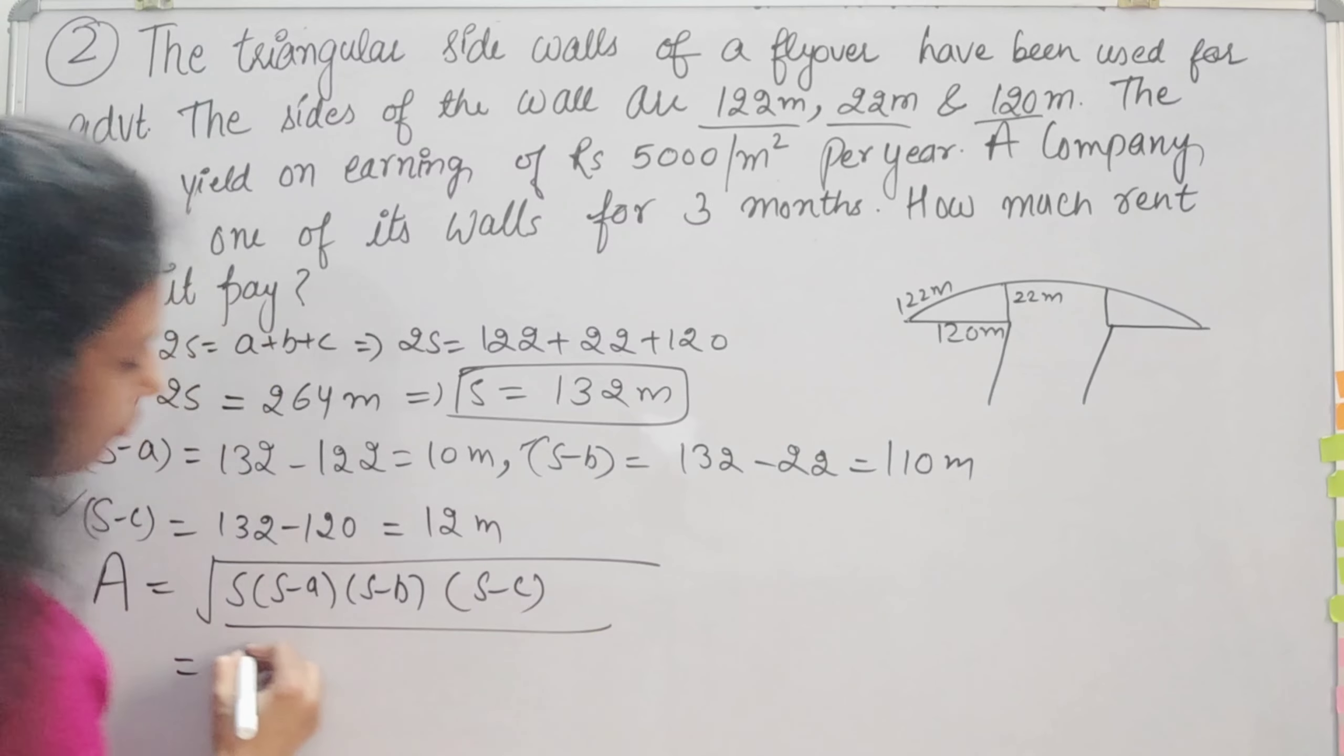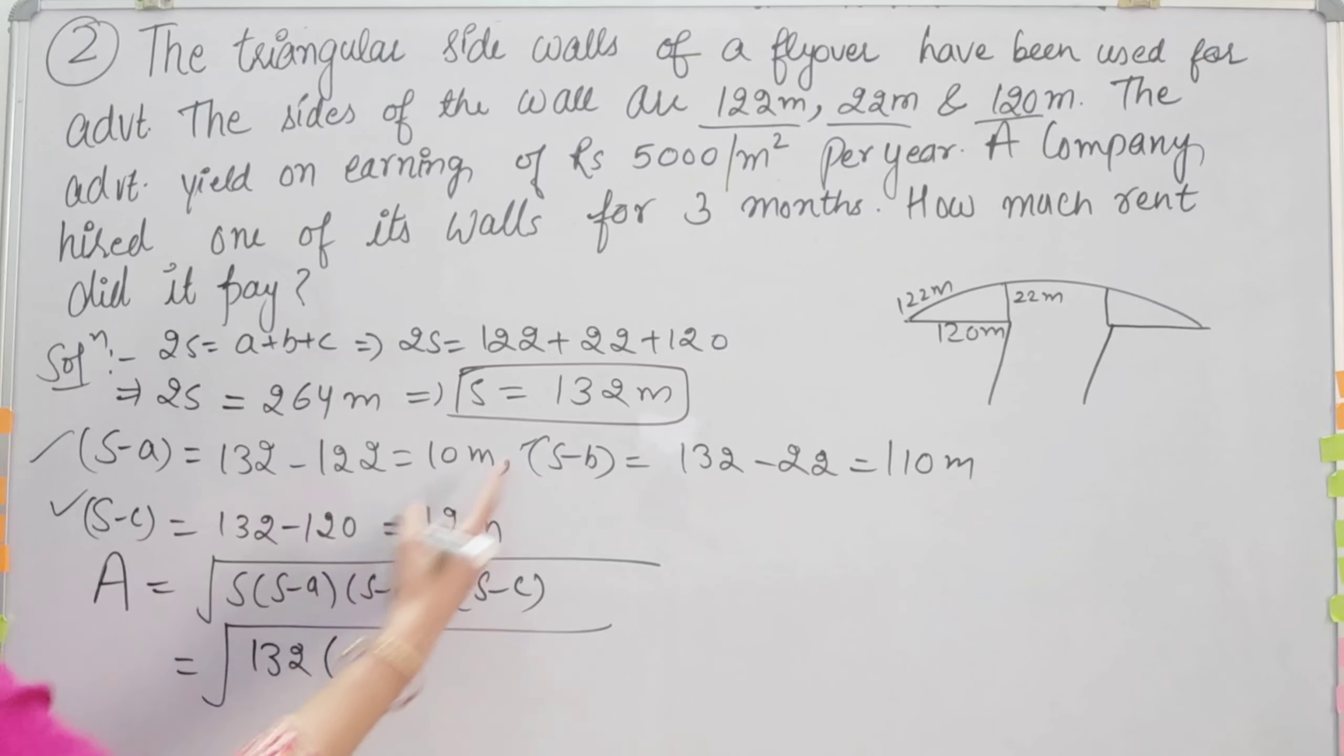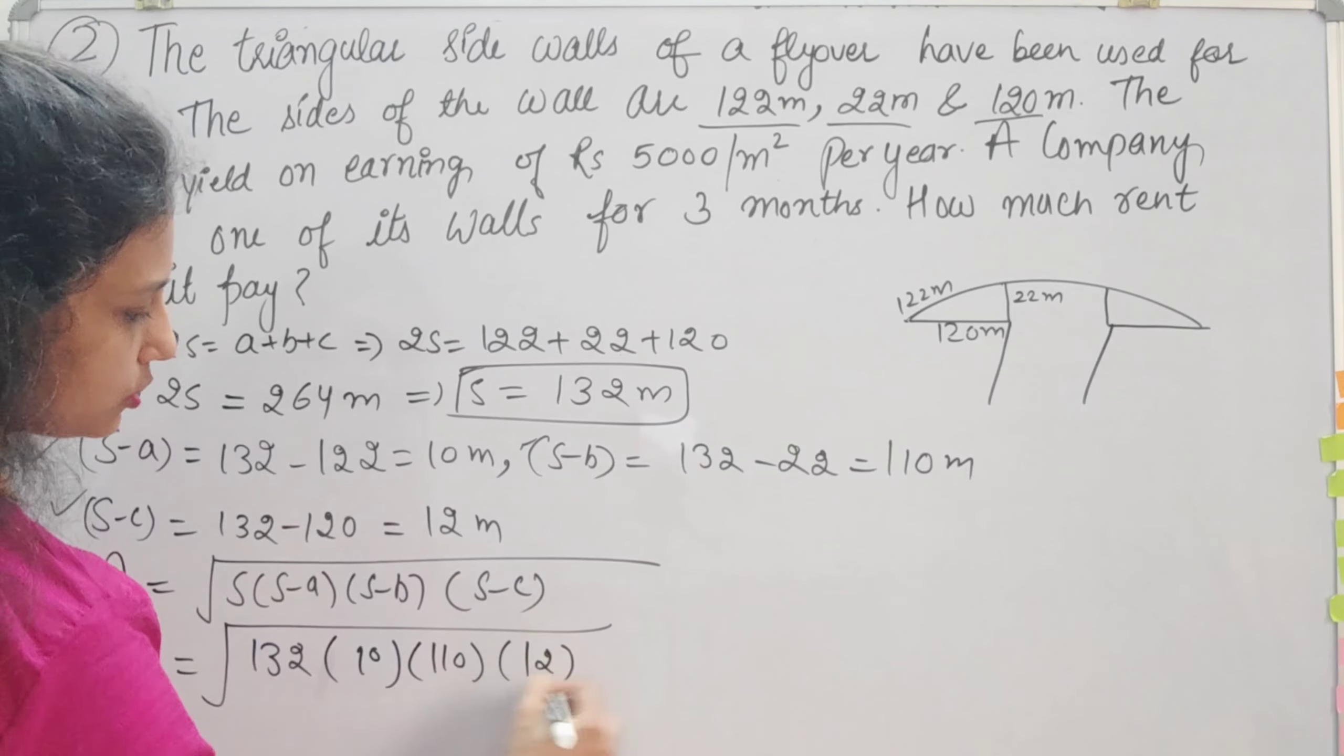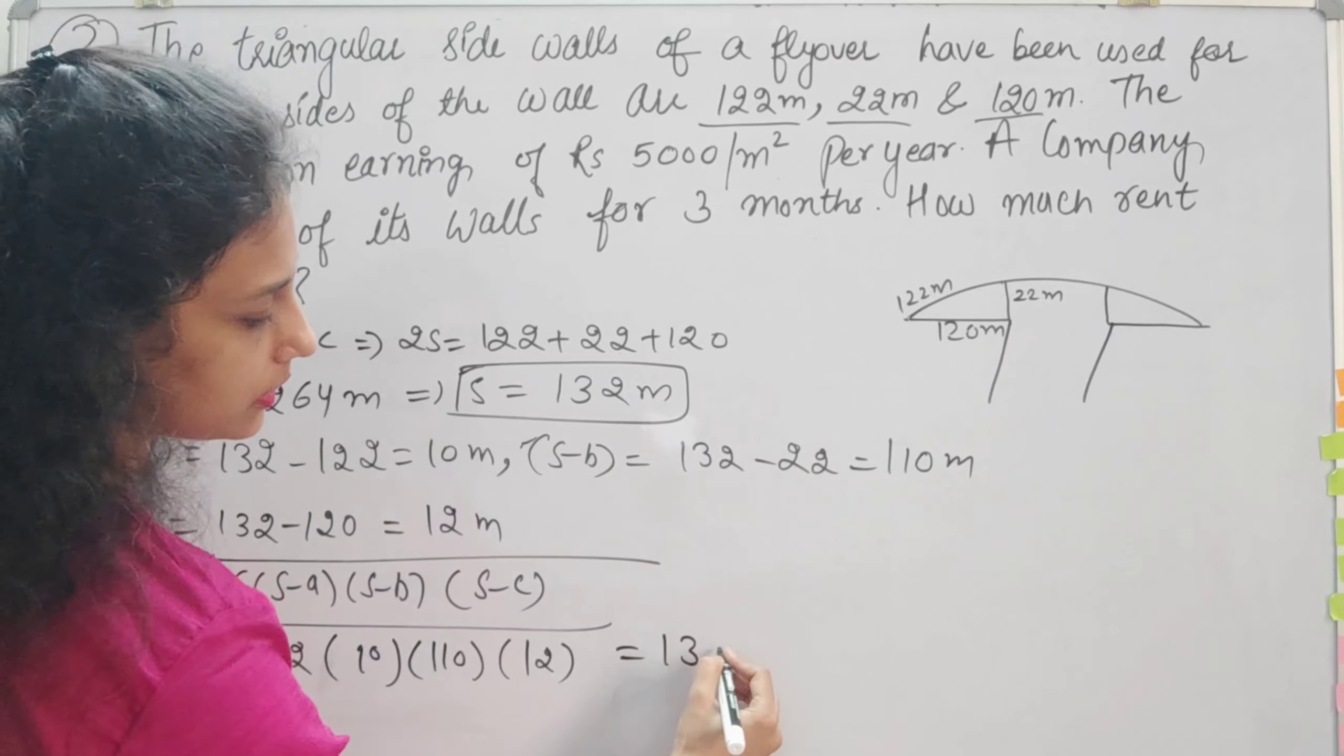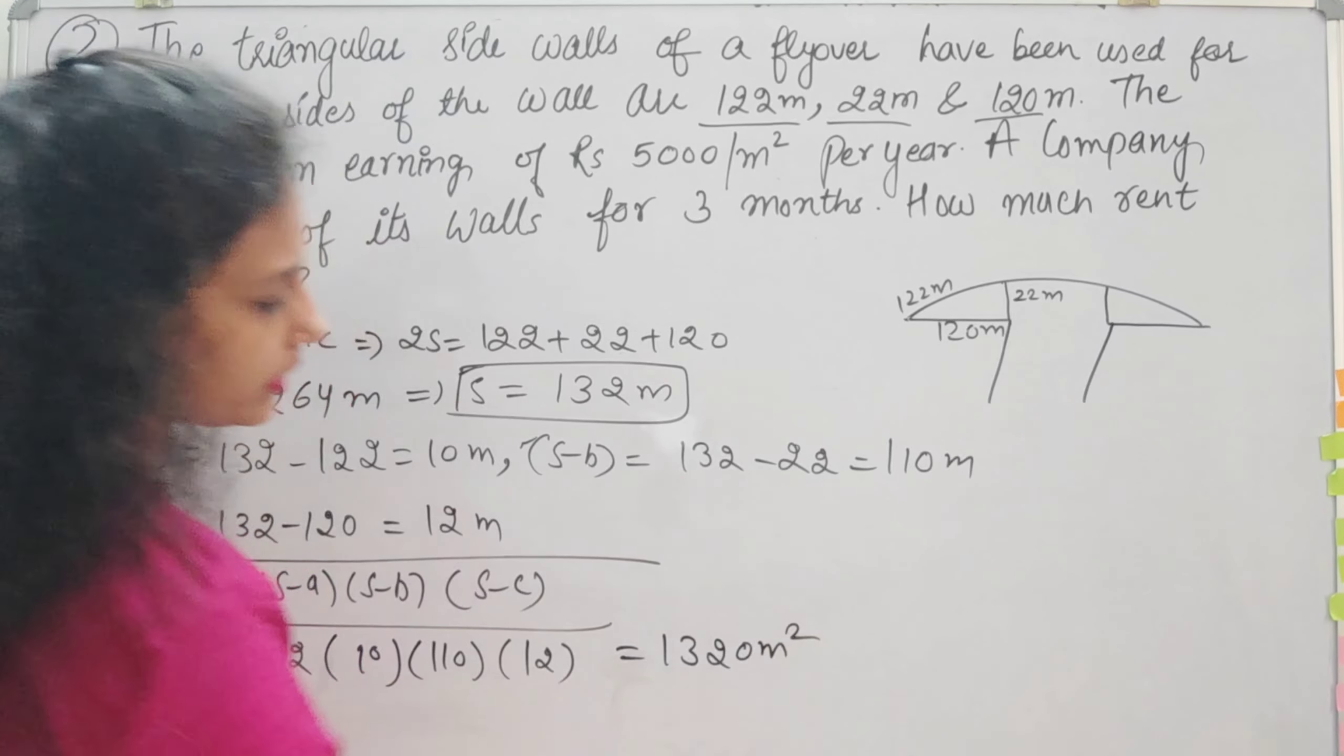Which is equal to under the root of s is 132, s minus a is 10, s minus b is 110, and s minus c is 12. If you solve it, it will be 1,320 meter square.